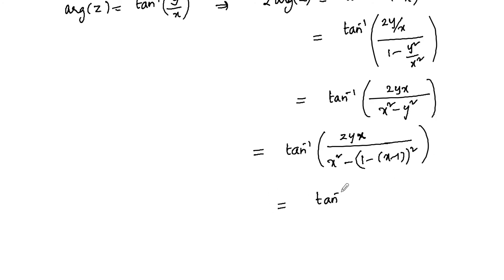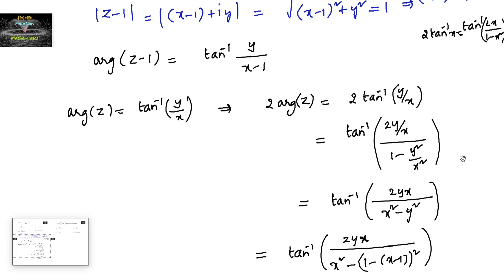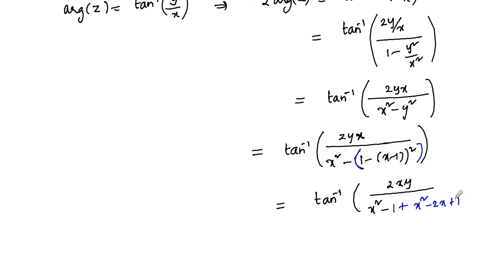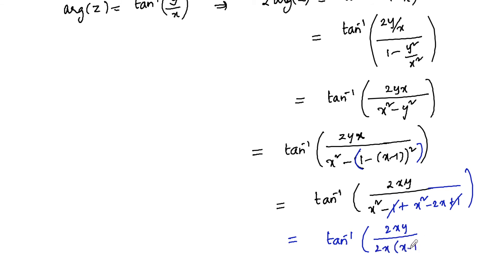So which equals tan inverse of x squared minus 1 plus (x minus 1) squared, that is x squared minus 2x plus 1. On simplifying, x squared terms cancel, giving x squared minus y squared equal to x squared minus 2x. The 2x terms get cancelled, so which equals tan inverse of y divided by x minus 1.